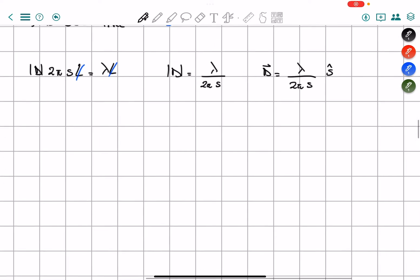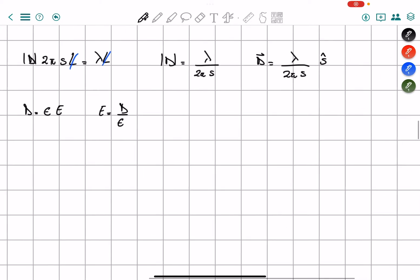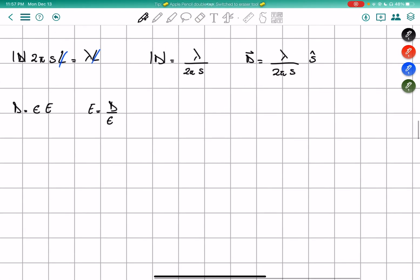Now, we know that D is equals to epsilon times E. So E is equals to D divided by epsilon. And we plug it back in our equation over here for D. We know that D is equals to epsilon times E, which is equals to this value right here.